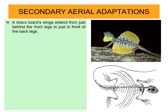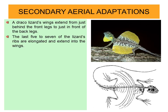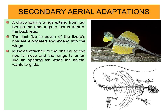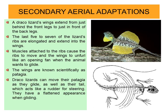The next example belongs to class Reptilia — that is Draco, the Draco lizard. Wings extend from just behind the front legs to just in front of the back legs. The last 5 to 7 of the lizard's ribs are elongated and extend into the wings. Muscles attached to the ribs cause them to move and the wings to unfurl like an opening fan when the animal wants to glide. The wings are also known as patagium. Draco lizards can move their patagium as they glide, and their tail acts like a rudder for steering. They have a flattened appearance while gliding and can glide as far as 60 meters.